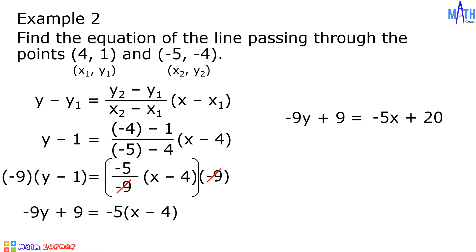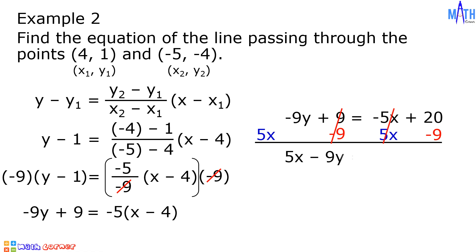Next, let us isolate the constant term on the right side of the equation. Let us add positive 5x on both sides and let us add negative 9 on both sides. Since 9 plus negative 9 is equal to 0 and negative 5x plus 5x is equal to 0, then we have 5x minus 9y equals 11. And this is the equation of the line passing through the points 4, 1 and negative 5, negative 4.